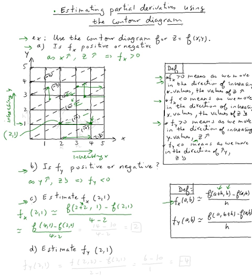So what is f of (4, 1)? f of (4, 1) is 14 — that's the z value on the contour. And f of (2, 1) is 10. So it's 14 minus 10 over 4 minus 2, which is 4 over 2, which equals 2.